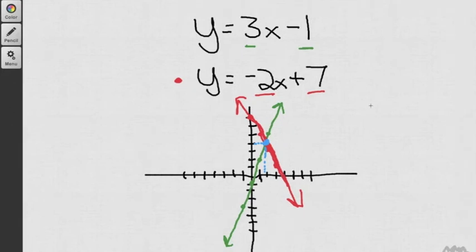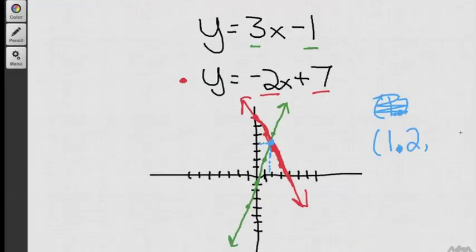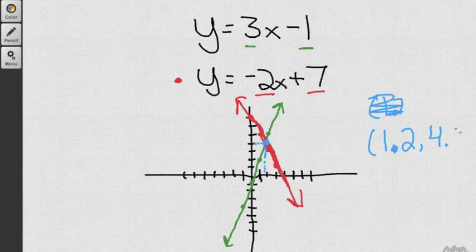So that's my answer. 1.2 comma 4.6. And just remember that the 1.2 is the value of the x, and the 4.6 is the value of the y. That makes both of these equations true.